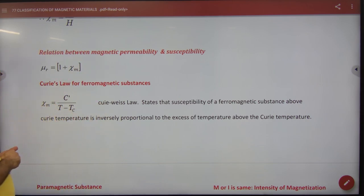It states that the susceptibility of a ferromagnetic substance above the Curie temperature is inversely proportional to excess of temperature above Curie temperature.